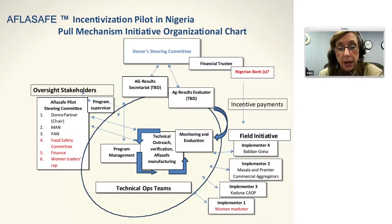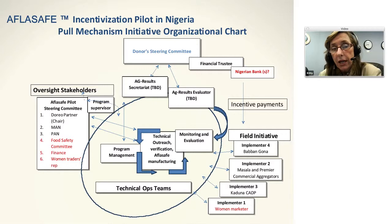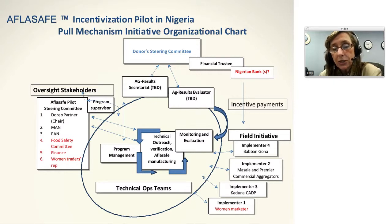This is the kind of program the World Bank is testing right now. It's part of AgResults, supported by a number of global donors — World Bank, Canada as a primary driver, Bill and Melinda Gates, the US, and the EU. The idea is to incentivize the commercialization of a product — in this case the Aflasafe biocontrol. The question is: how do you get farmers to grow something and create the incentive for them to do this long-term?